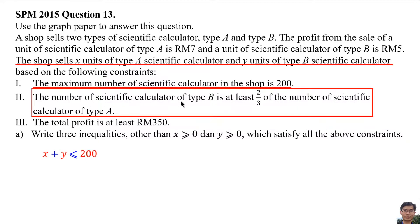Number of scientific calculator of Type B means y, at least means more than or equal, 2 over 3 of the number of scientific calculator of Type A means 2 over 3x.